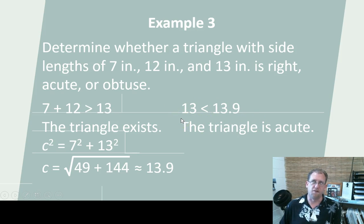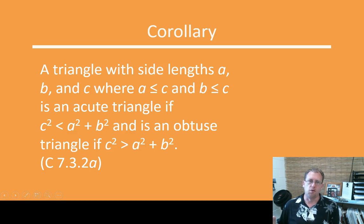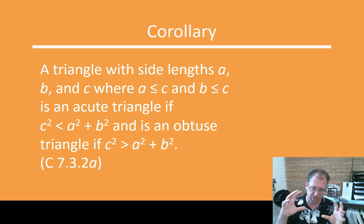If it were a right triangle, then the hypotenuse would have to be 13.9. The hypotenuse is smaller, which means that the angle has squeezed in, and so it's not a right triangle, right? It's an acute triangle. We'll do a couple more examples like that in class, in your classwork. So this is the corollary that we just demonstrated. If A squared plus B squared equals C squared, then it's a right triangle. If A squared plus B squared is less than C squared, then it's an acute triangle. If A squared plus B squared is more than C squared, then it is, in fact, an obtuse triangle. So this corollary just puts down on paper what we just demonstrated in that last example.